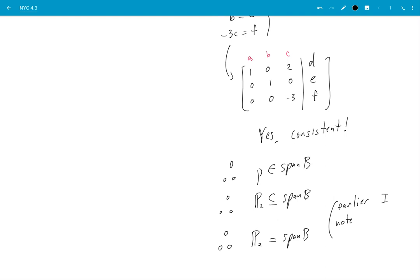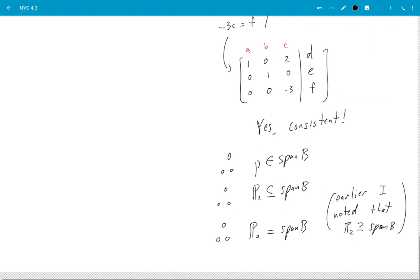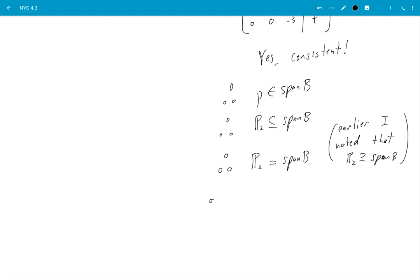Therefore P₂ actually equals span b, because earlier I noted that P₂ obviously contains span b. Okay so my reasoning here is that if P₂ is in span b and span b is in P₂, how can that possibly be true? Well, only if they're equal. Okay so I've proven one and two therefore b is a basis for P₂.